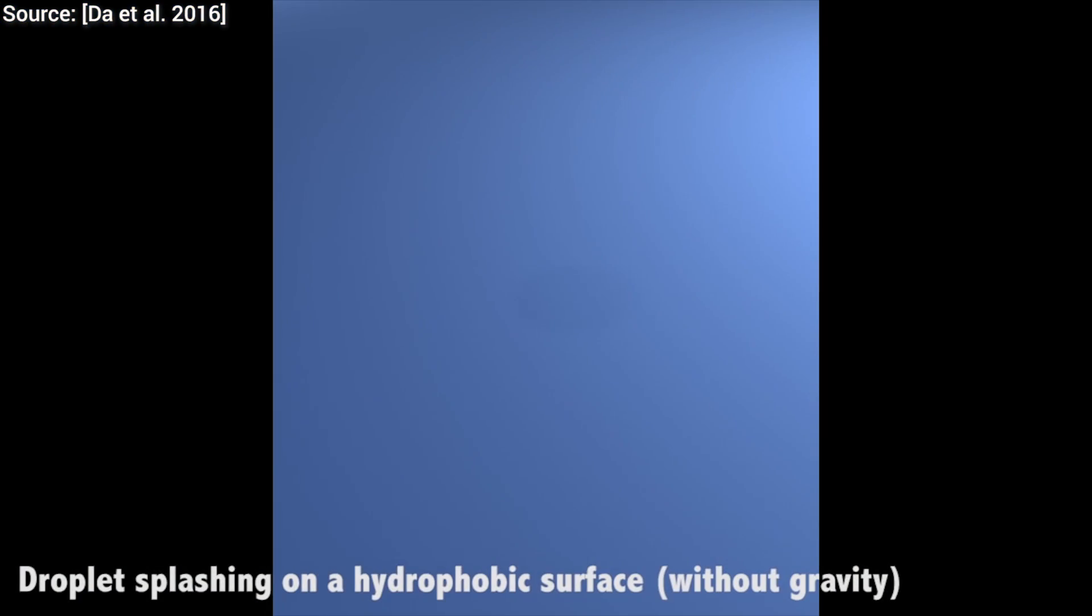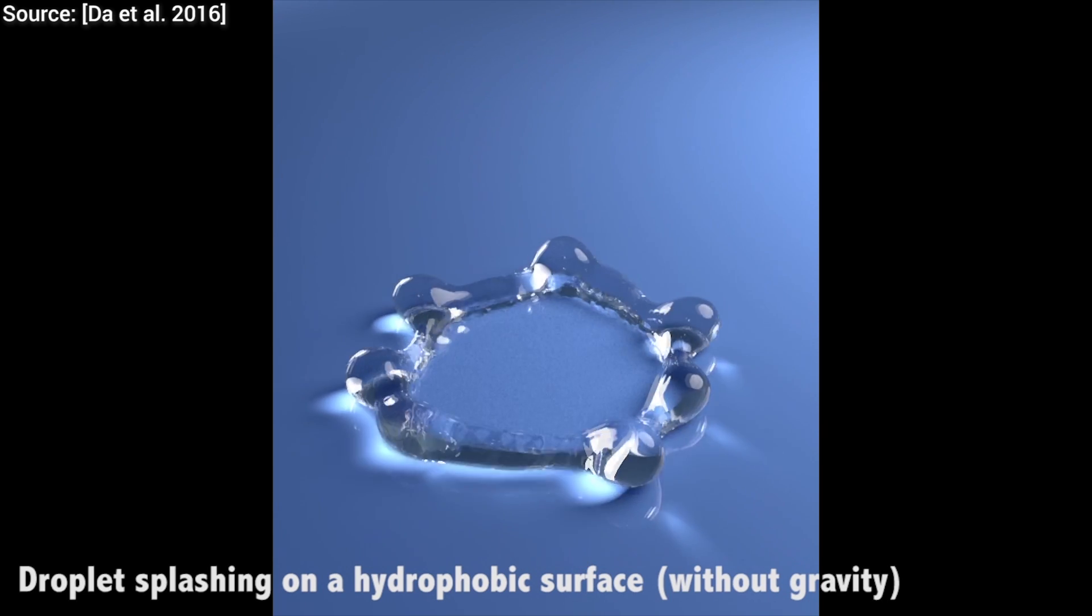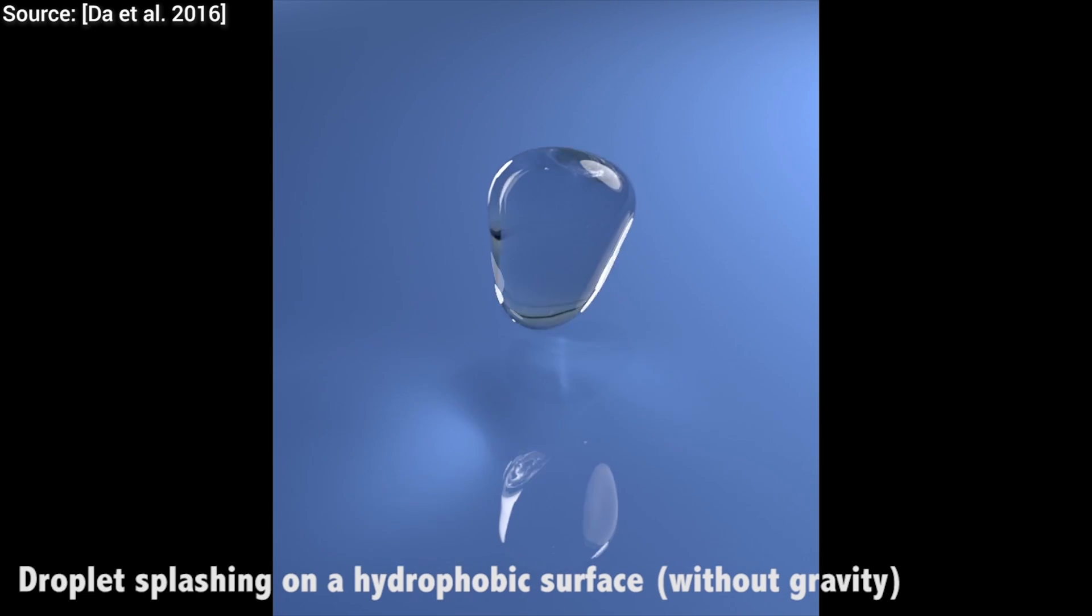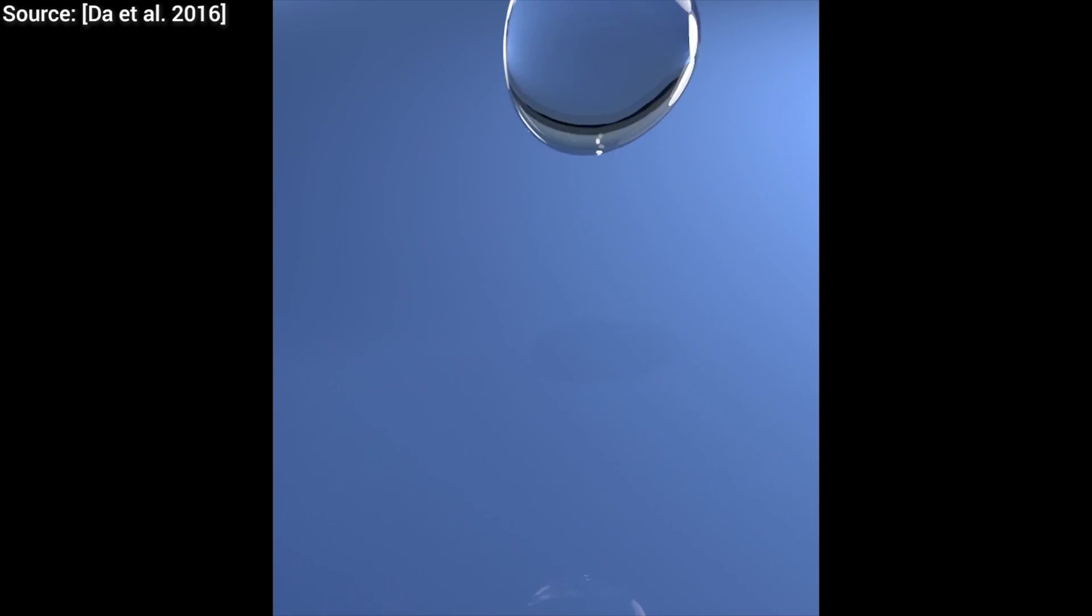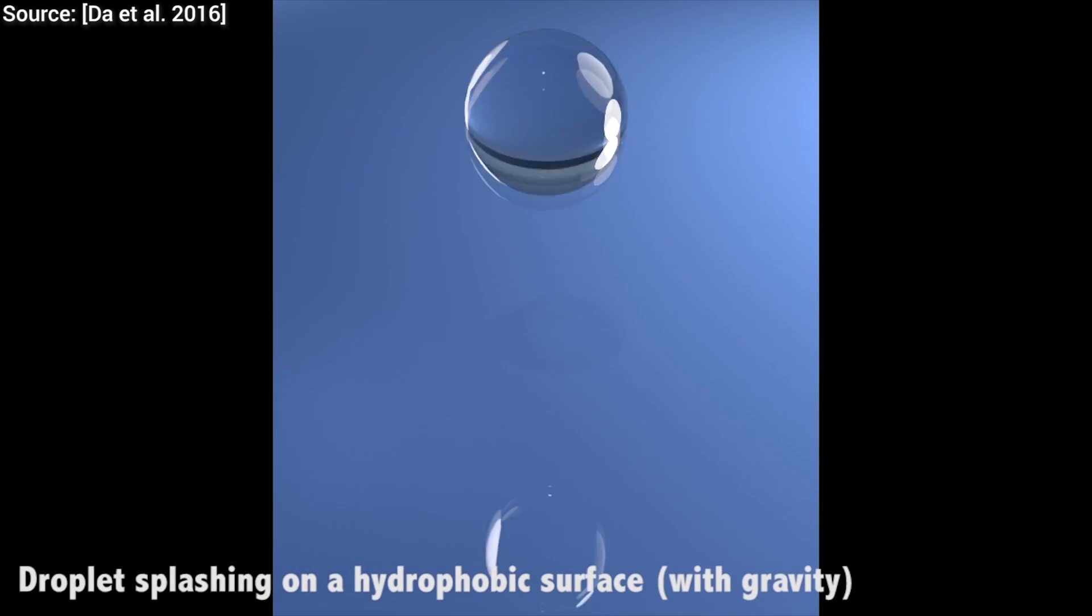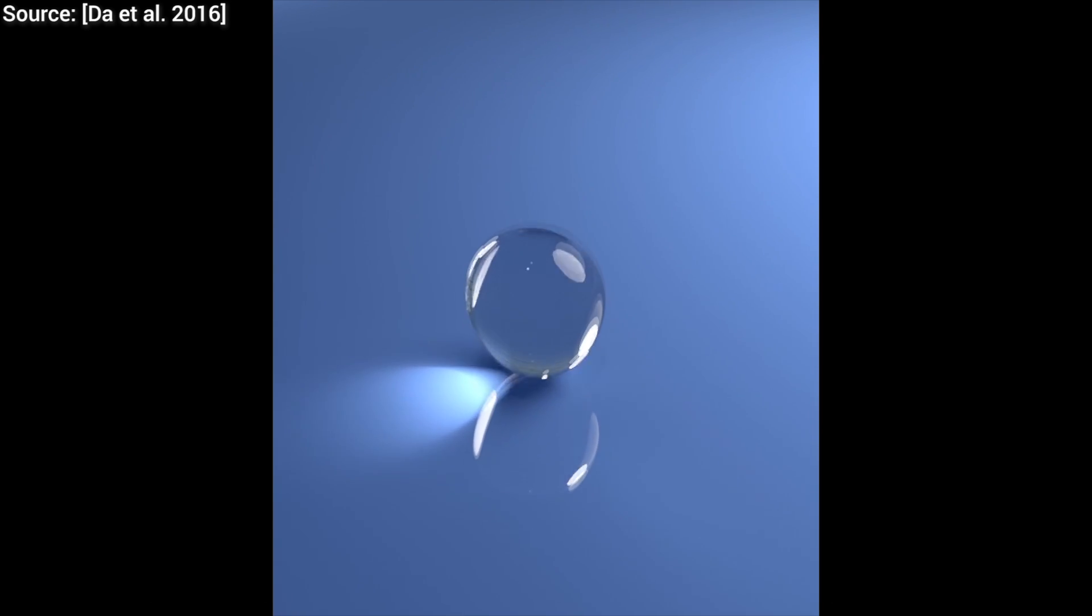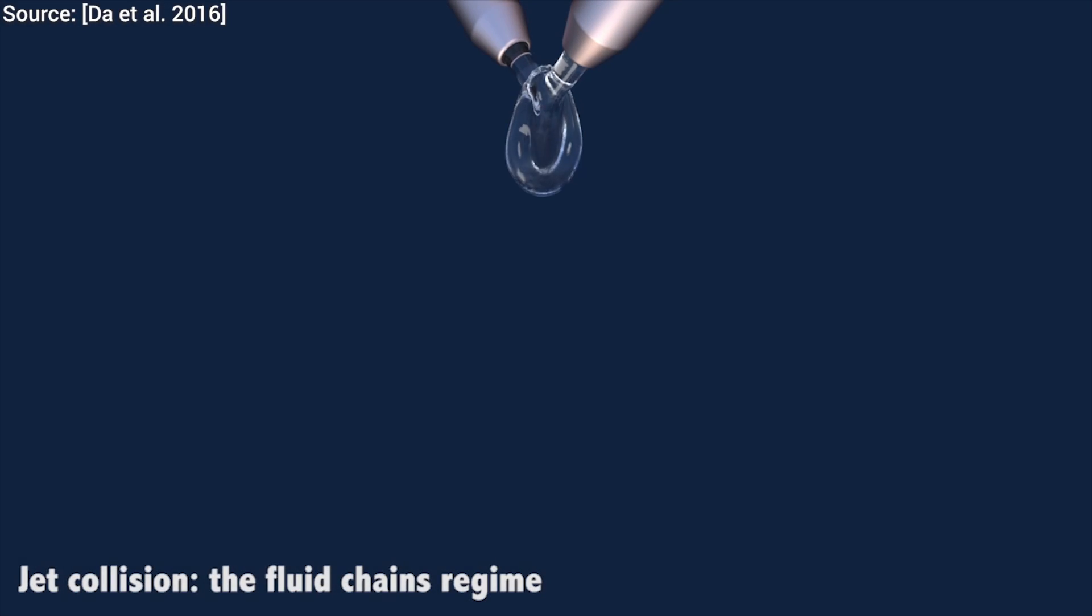Fortunately, a new class of algorithms is slowly emerging that try to focus more resources on computing what happens near the surface of the liquid and try to get away with as little as possible inside of the volume. This piece of work shows that most of the time, we can get away with not doing computations inside the volume of the fluid, but only on the surface.